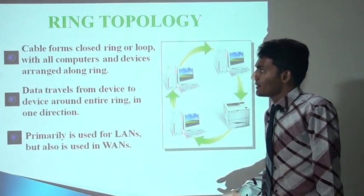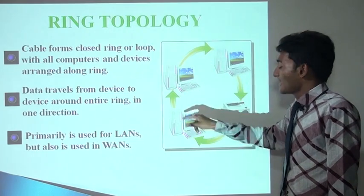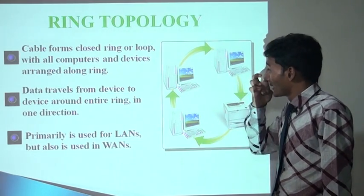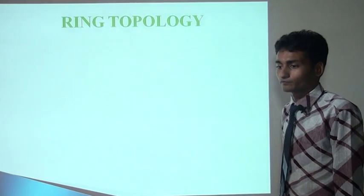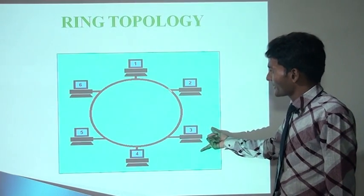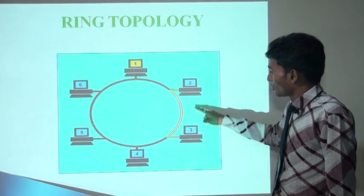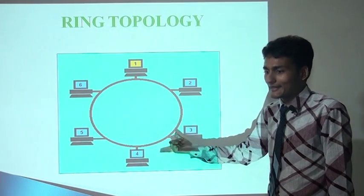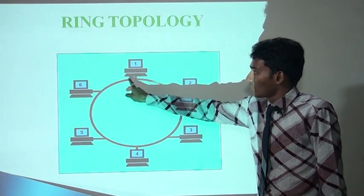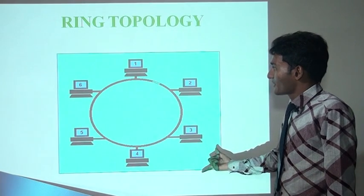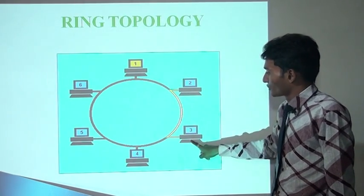Ring topology means all computers are connected through a closed loop. All computers and devices are arranged in a ring group. Data travels around the entire ring loop. This is generally used in LAN but also used in WAN. In this animation, we can see that computer number one wants to transmit data to computer number four — it transmits from one to two, two to three, and three to four. Computer four receives the data.